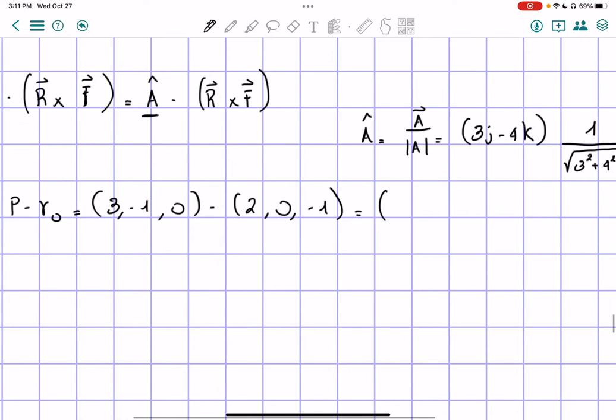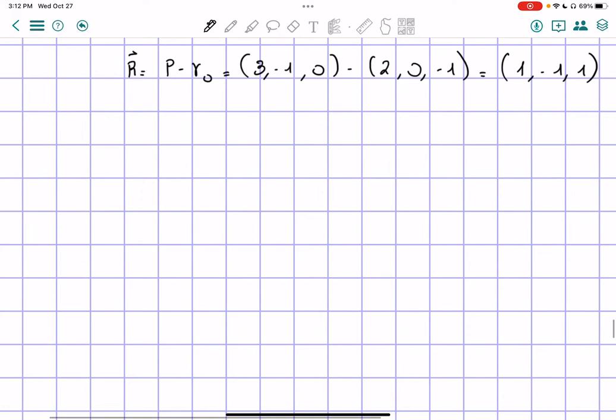So we're going to have a simple subtraction of matrices, which is 1 by 3 minus 1 by 3, so everything is fine. And so we're going to have 1, negative 1 and 1. That is our r vector.